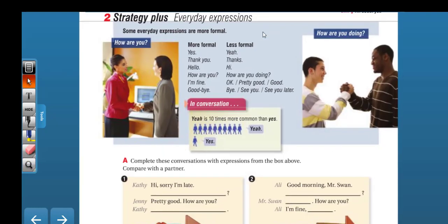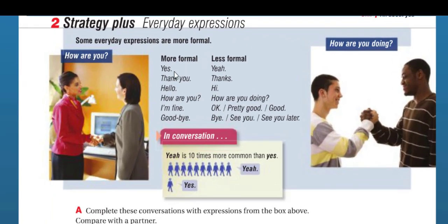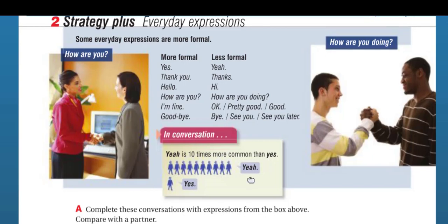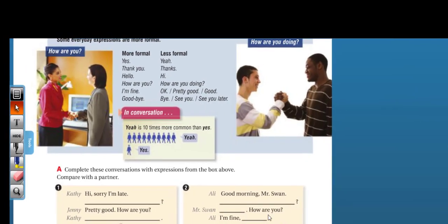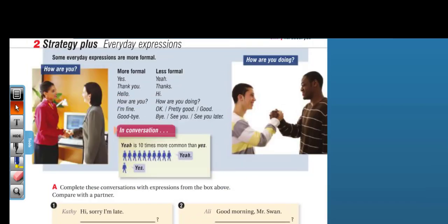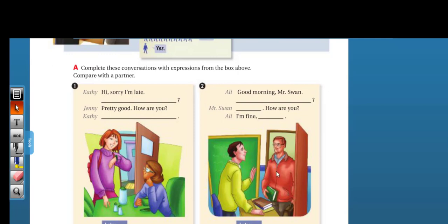Everyday expressions — formal vs. informal. Formal: 'Yes,' 'Thank you,' 'Hello,' 'How are you?' 'I'm fine,' 'Goodbye.' Less formal or informal: 'Yep' instead of 'yes,' 'Thanks,' 'Hi,' 'How are you doing?' 'Pretty good,' 'Bye,' 'See you,' 'See you later.' In conversation, 'yeah' is ten times more common than 'yes.' Complete this conversation with expressions from the box — use the formal way here and the less formal there.